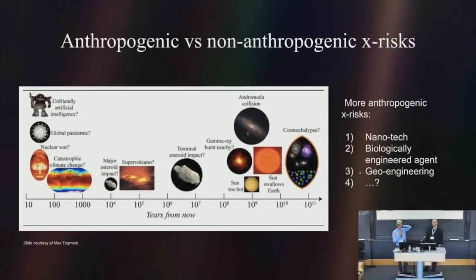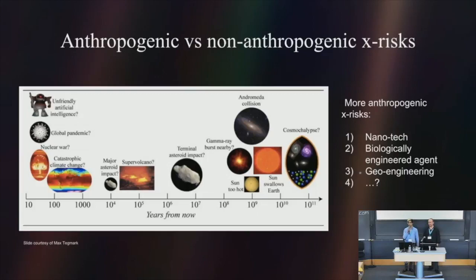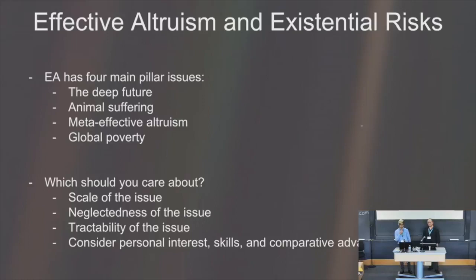In the existential risk community, we're more worried about anthropogenic risks — ones created by people. These are arising on much shorter timelines, and refer to things like unfriendly artificial intelligence, nuclear war, and global pandemics. One reason why we care about them more is because we have more causal efficacy over them — we can actually do something about them. They're not something very big and difficult to stop, like the end of the universe, the cosmocalypse, or colliding with Andromeda.